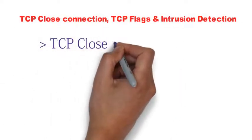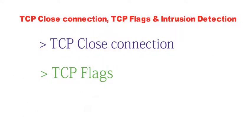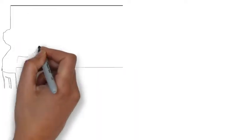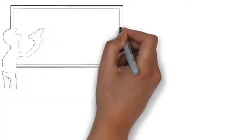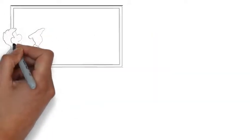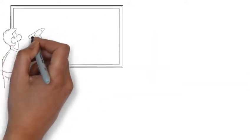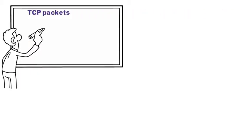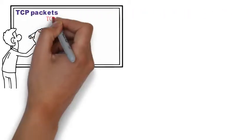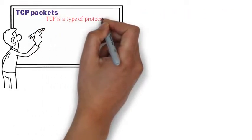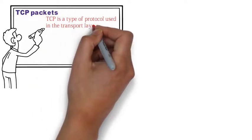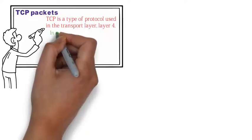Before we go back to the Wireshark interface, I want to use this video to tell you a little bit more about packets. More specifically, I want to tell you about TCP packets. TCP is a type of protocol used in the transport layer, layer 4.